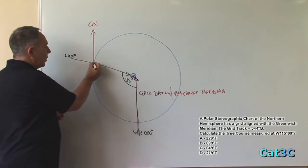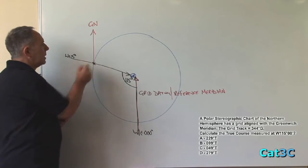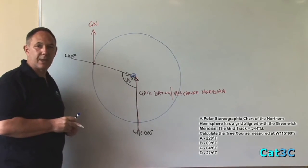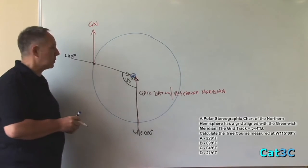Now that I've got a reference for grid north at this position, I can mark on the grid track of 344 degrees.